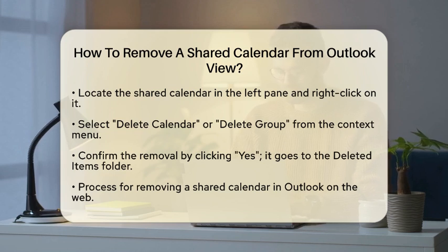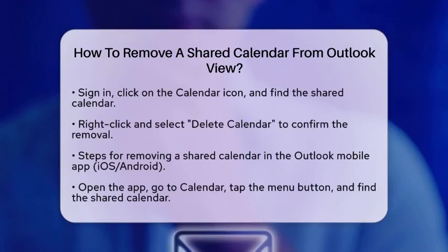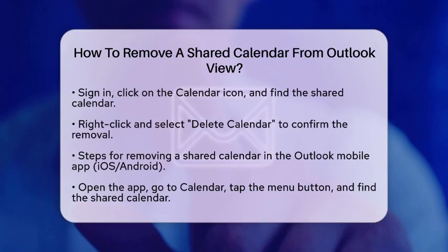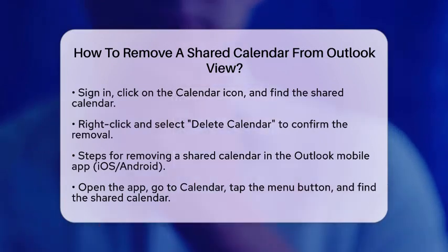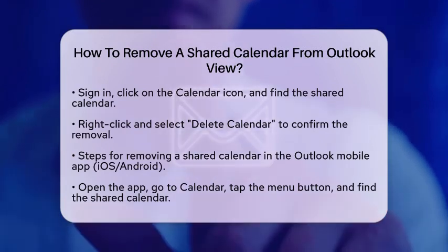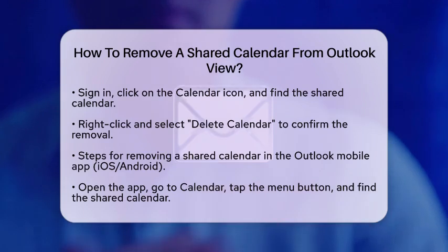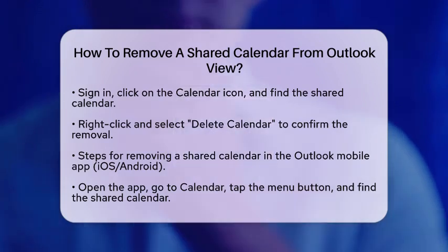If you are using Outlook on the web, the process is quite similar. Sign in to your Outlook account and click on the calendar icon. In the left calendar list, find the shared calendar you want to remove. Right-click on it and select Delete Calendar if that option is available. Confirm the removal and you are all set.